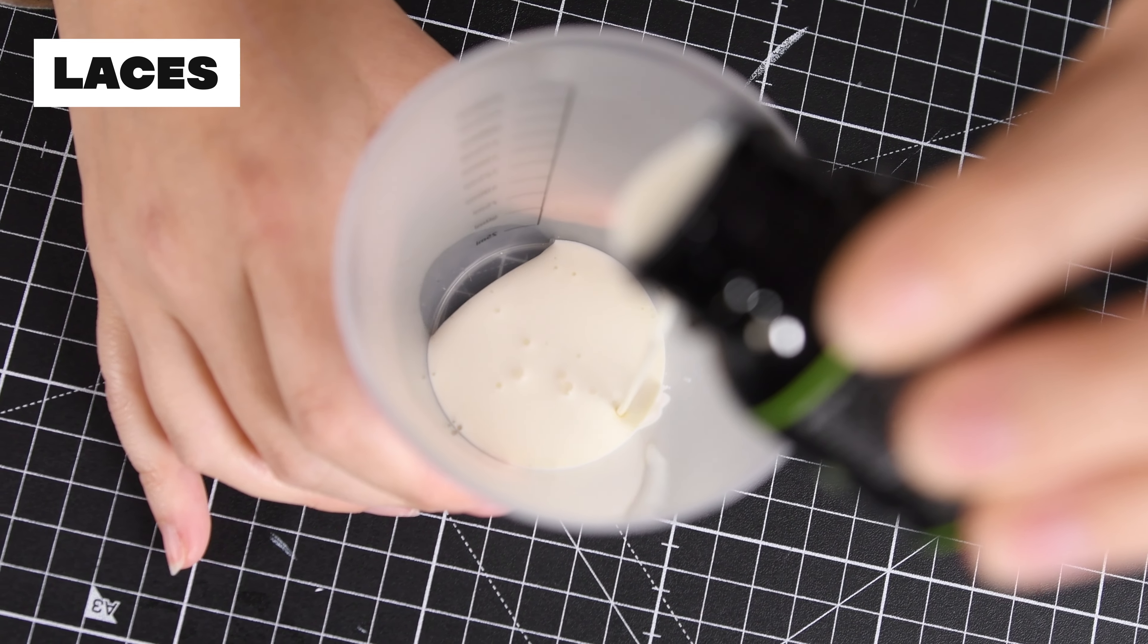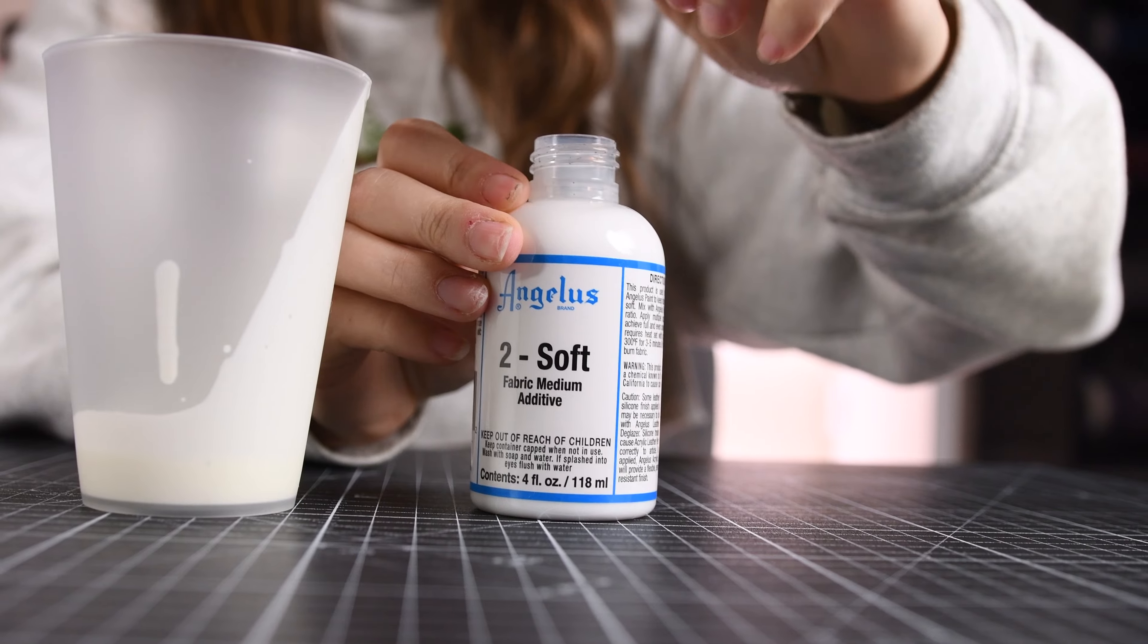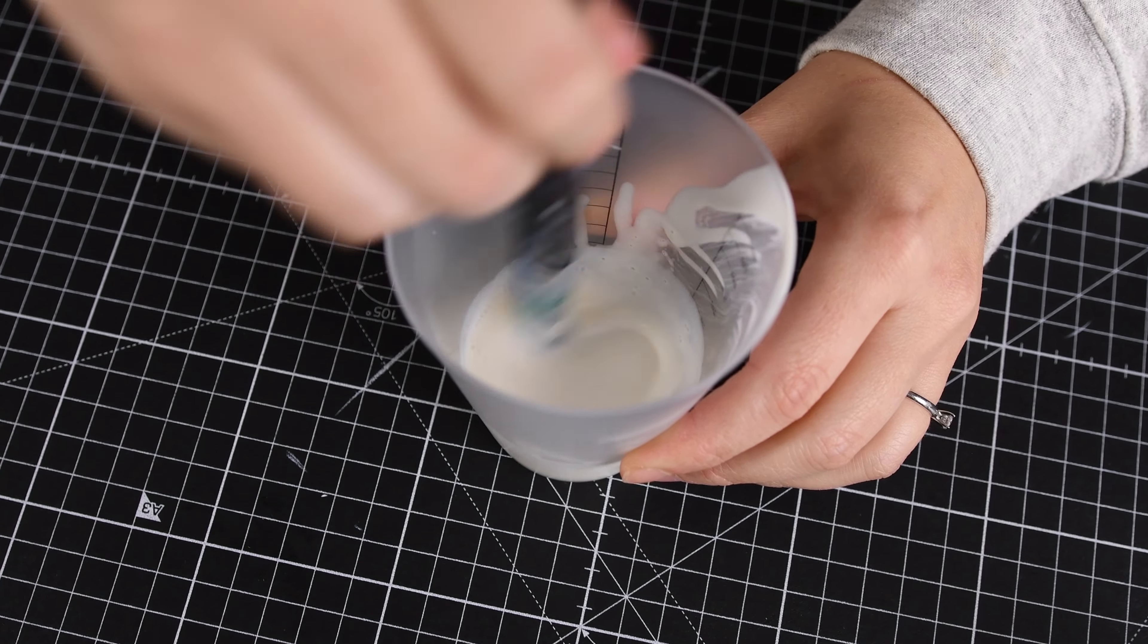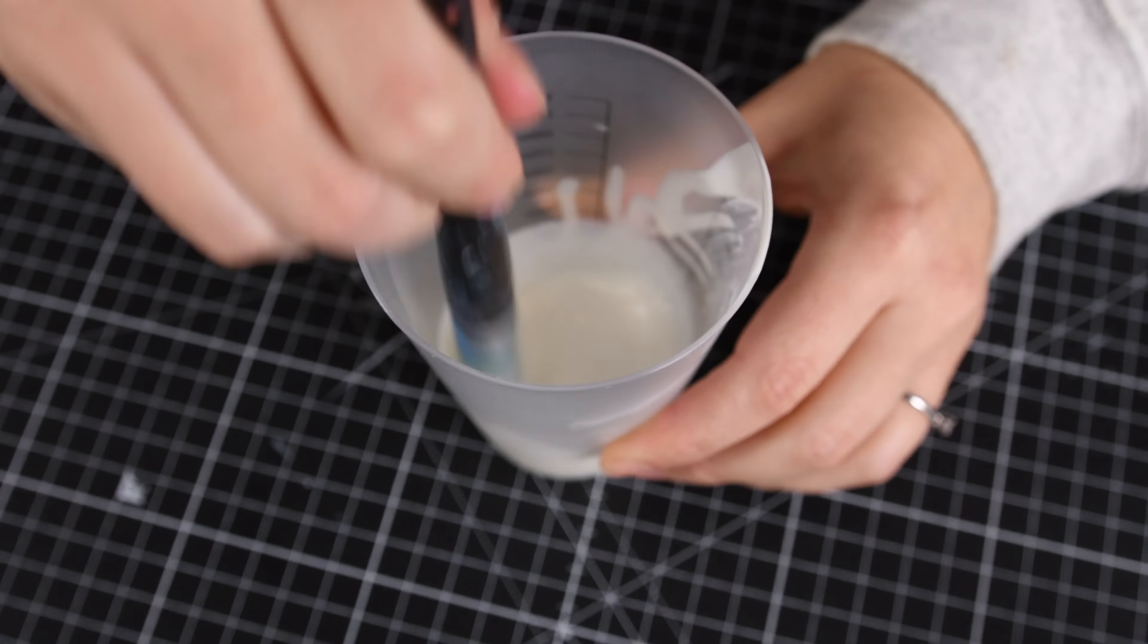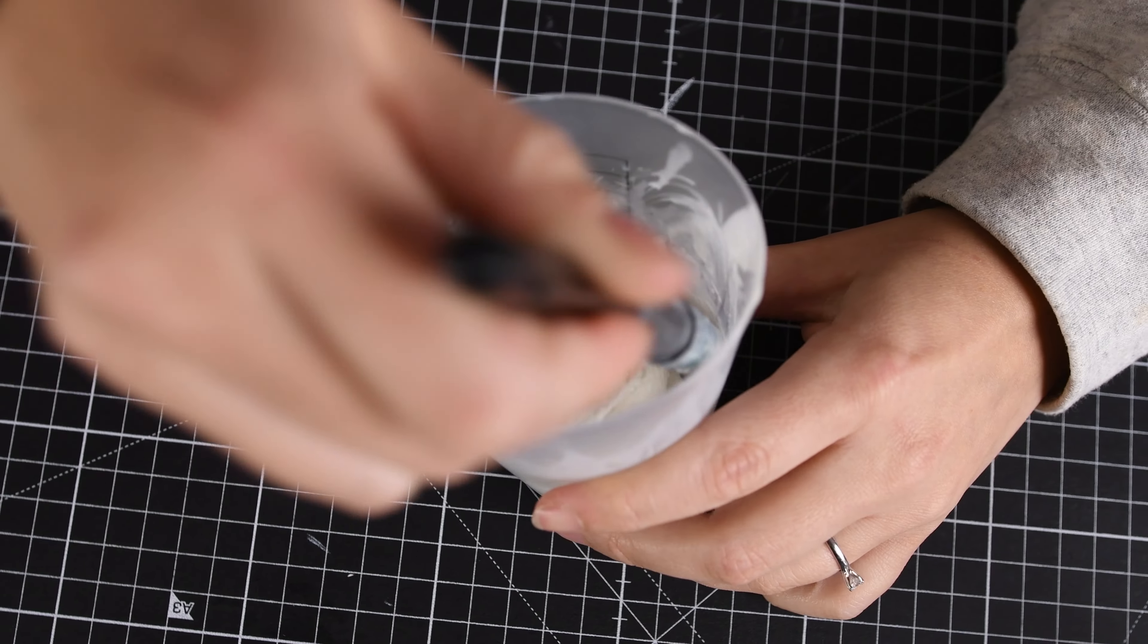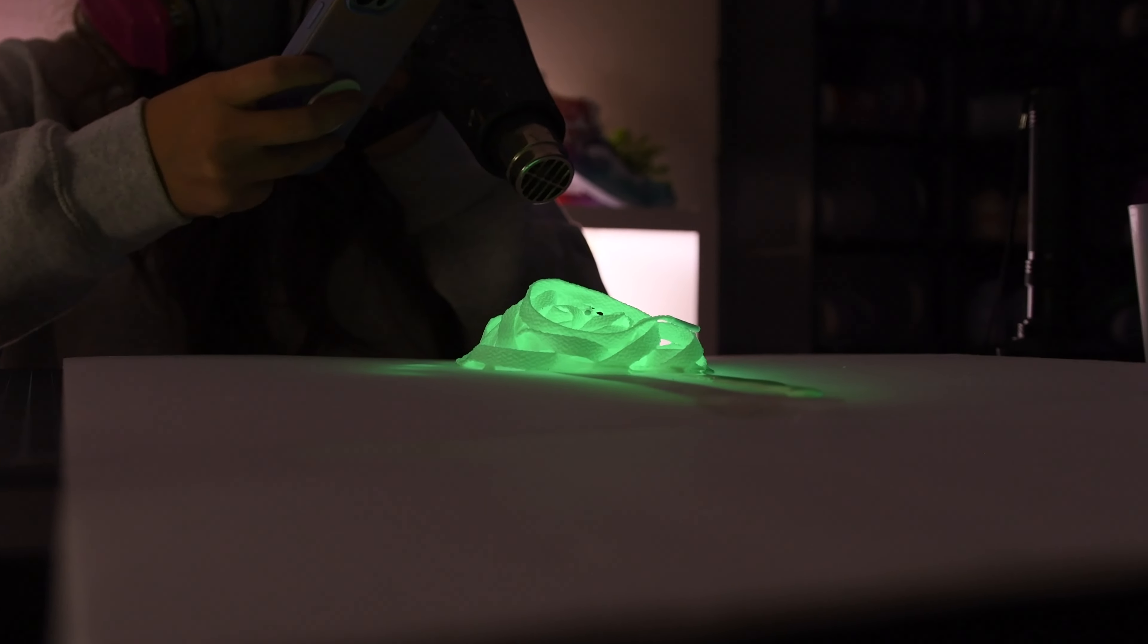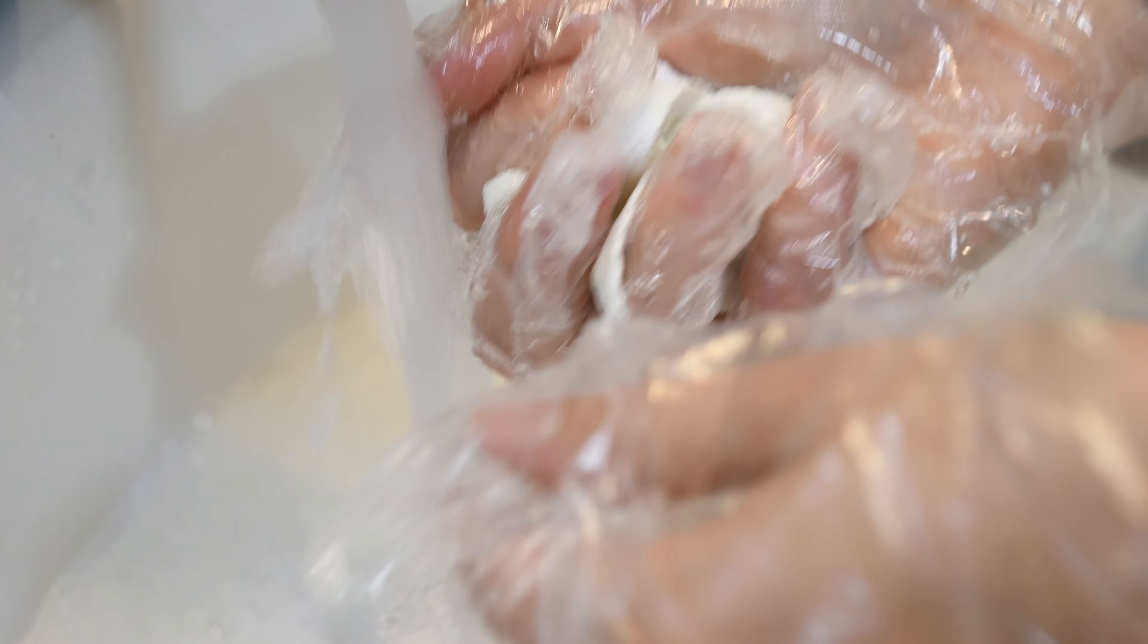So for the laces, we're going to mix a one-to-one ratio of paint with Too Soft. Too Soft is a fabric medium that keeps any fabric soft and flexible when painting with it, so it's definitely an essential here. I'm going to make sure the laces are fully saturated on all sides, and then I put on my face mask and heat set for three to five minutes. Rinse out any leftover paint and leave to air dry overnight.